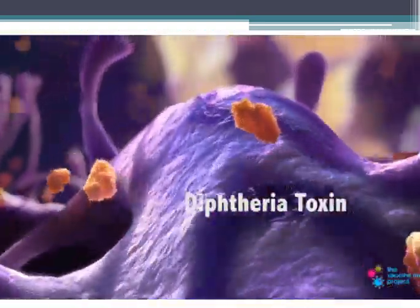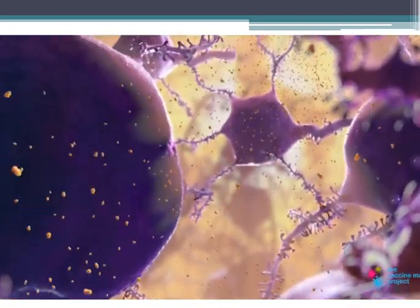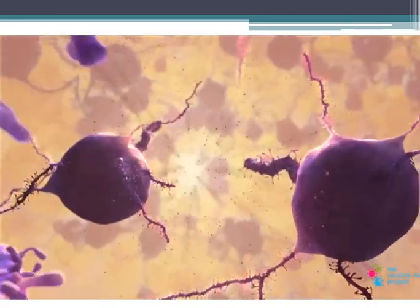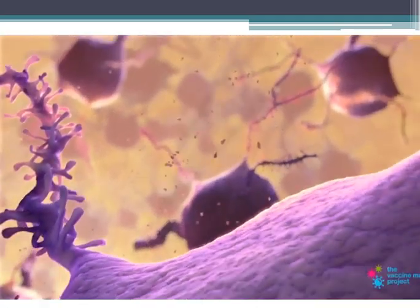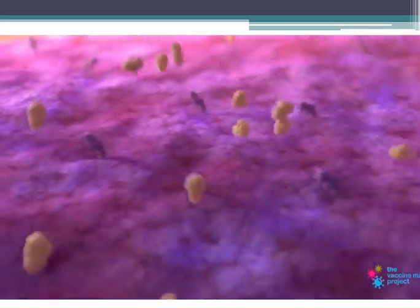Let's take an example. Diphtheria toxin that is shown here in orange is a serious toxin that affects the different cells of the nervous system and causes their destruction.